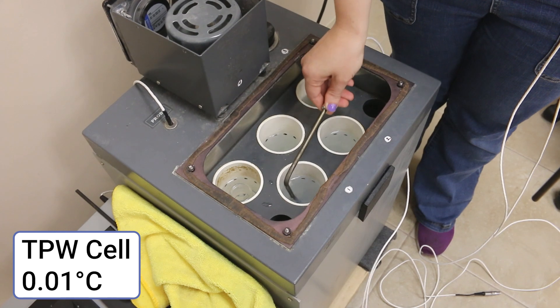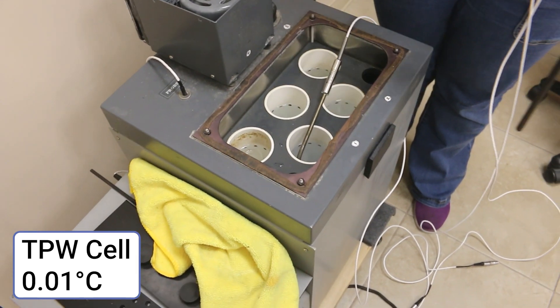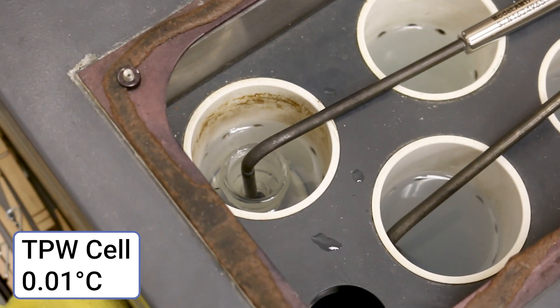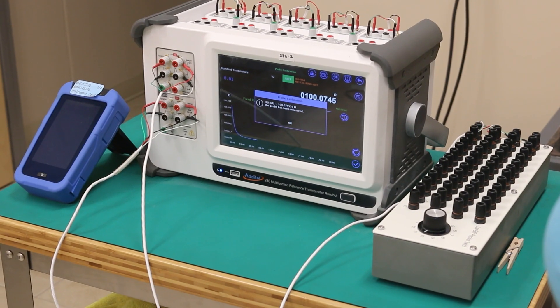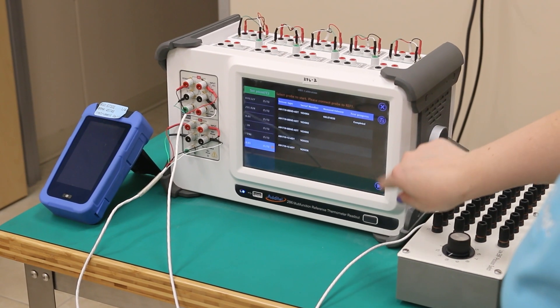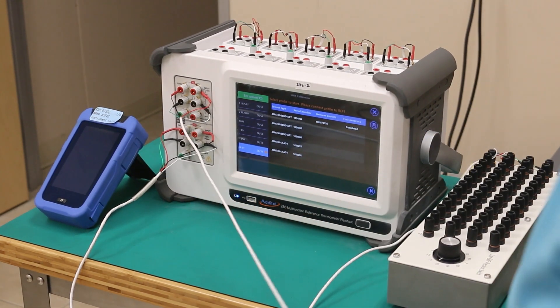Finally, the DUT probes will undergo one more triple point of water measurement. This will be done using the exact same procedure as previously shown in the video. In the final calculation, both triple point of water values on each probe will be averaged to ensure the probes are functioning normally across both ITS-90 sub ranges.